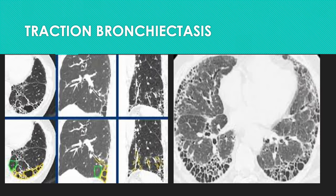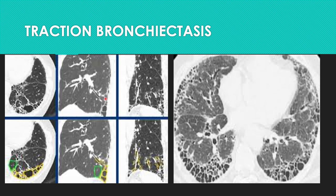Another very commonly described sign in UIP and IPF is traction bronchiectasis. Traction bronchiectasis — or bronchiolectasis — is very commonly seen in the UIP pattern. The presence of honeycombing and traction bronchiectasis is pathognomonic of a typical UIP pattern. In an atypical or probable UIP pattern, you may get just traction bronchiectasis without honeycombing. Looking at these series of scans, you can see honeycomb cysts and dilated bronchi along the path.